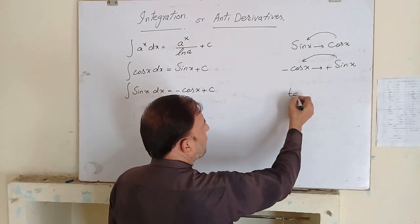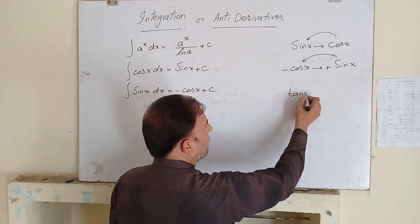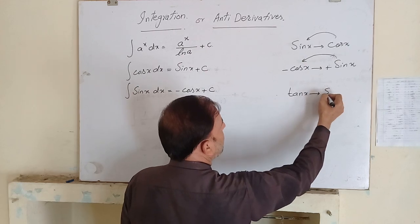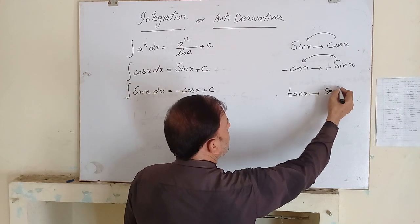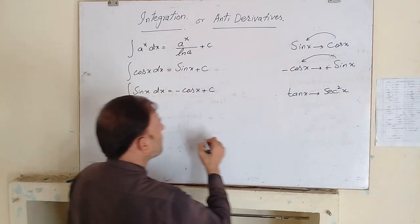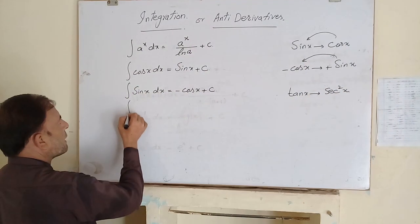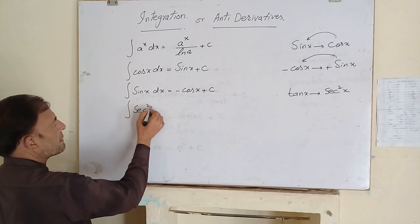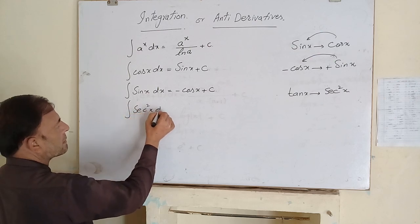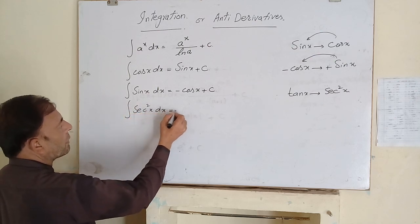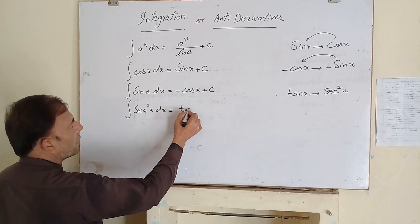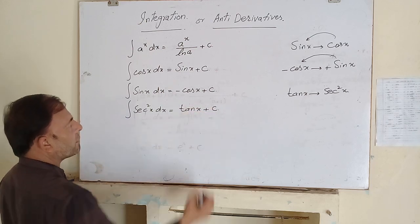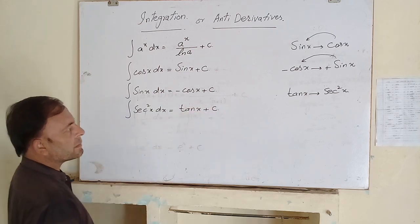We have the derivative of tan x, which is secant squared x. It means the integration of secant squared x will be equal to tan x plus the constant of integration.